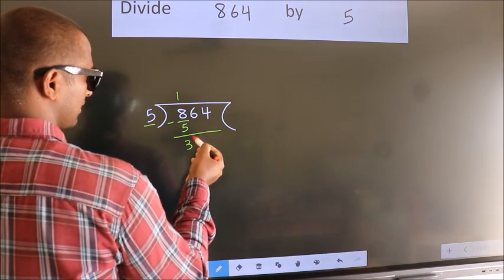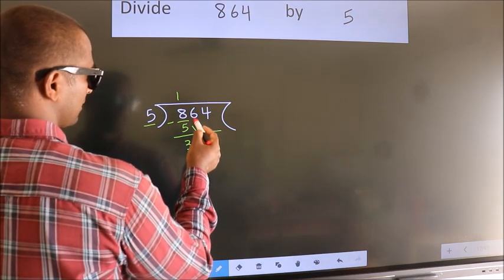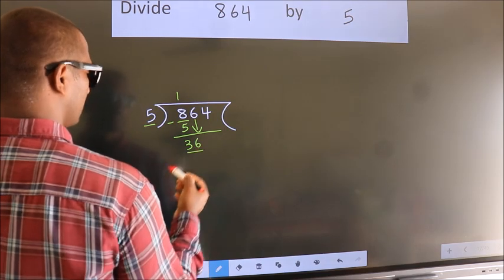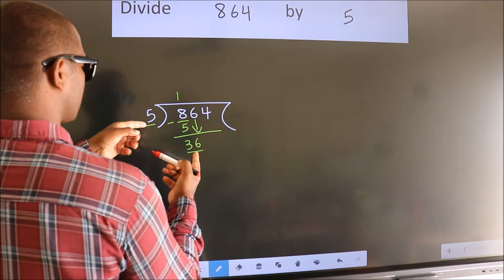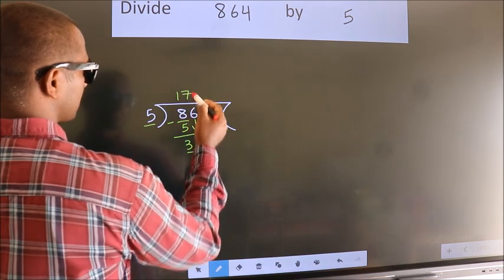After this, bring down the beside number. So, 6 down. So, 36. A number close to 36 in 5 table is 5 7s 35.